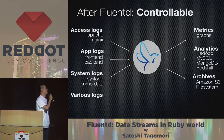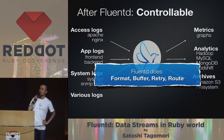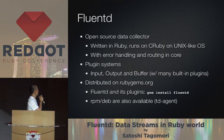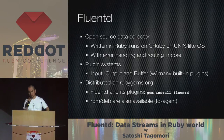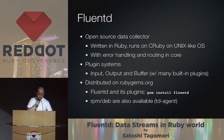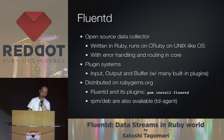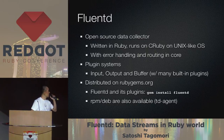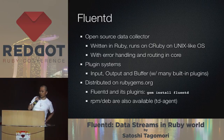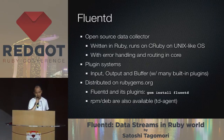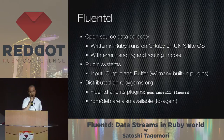Fluentd solves this problem and makes our situation very controllable. Fluentd handles formatting, buffering, retries, and routings. It is an open source data collector written in Ruby, running on CRuby on Unix-like OSes like Linux, Mac OS X, or BSD. Fluentd has error handling and routing in its core, along with a plugin system with input, output, and buffer plugins — many built-in plugins included. Fluentd is distributed on rubygems.org so you can install it with simply gem install fluentd, and plugins are installed the same way.